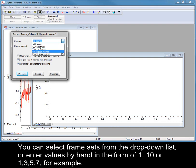You can select framesets from the dropdown list, or enter values by hand in the form of 1-10, or 1-3-5-7, for example.